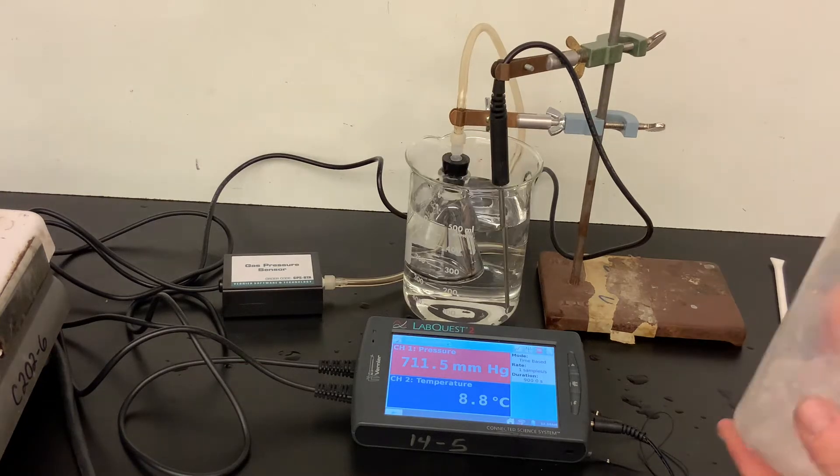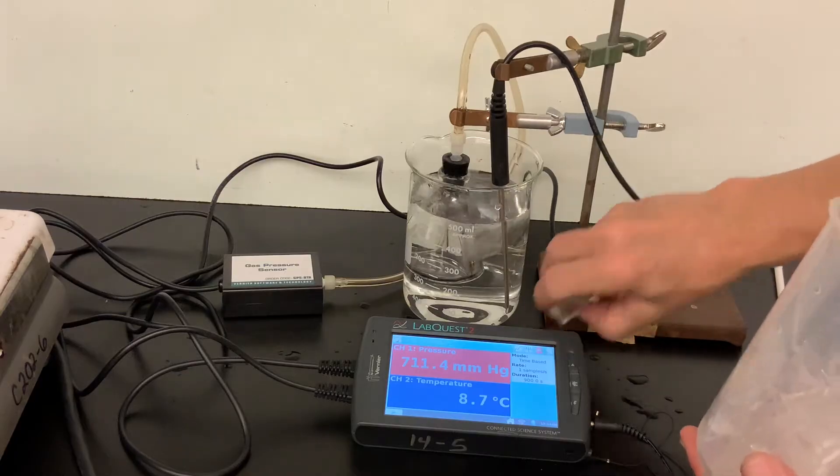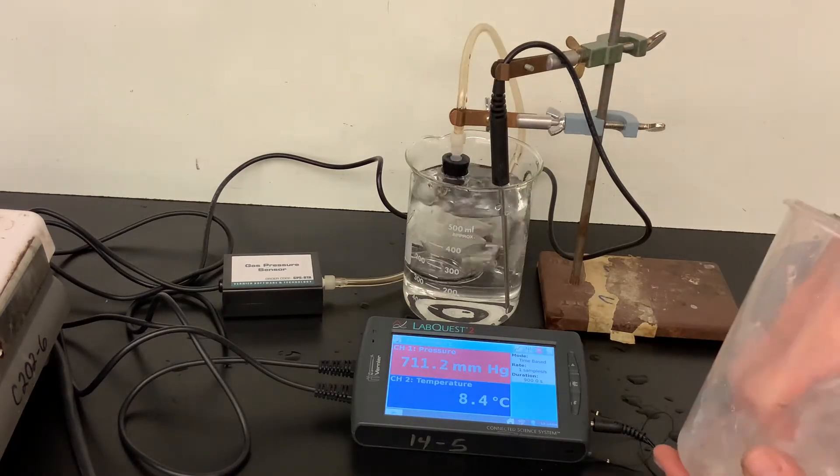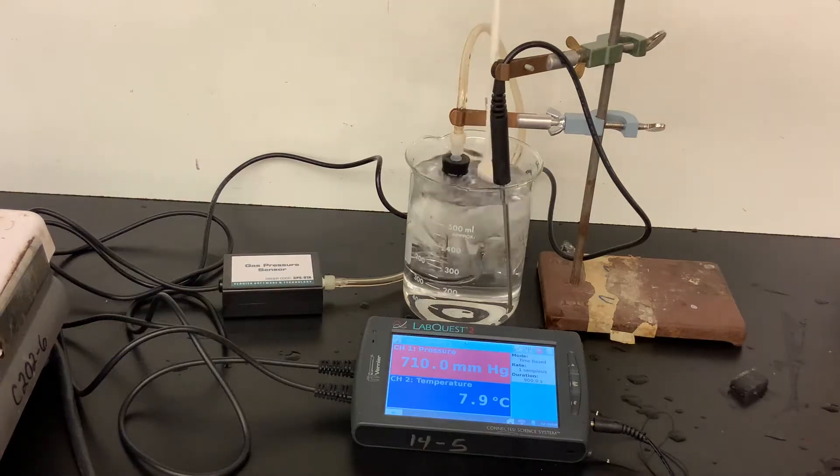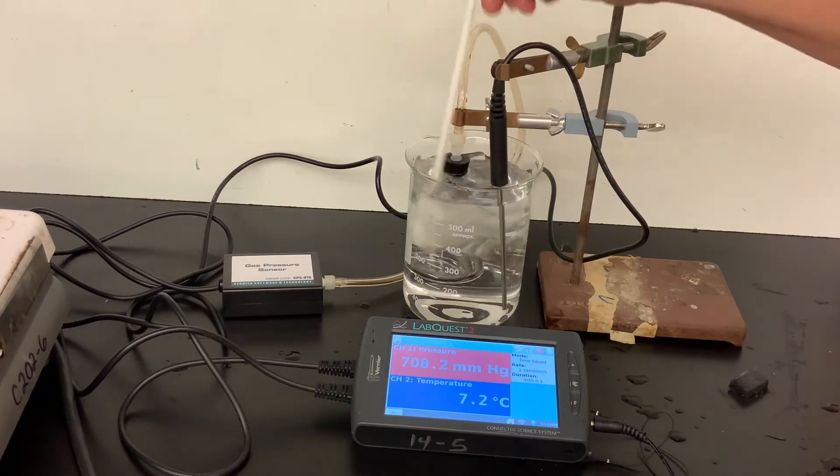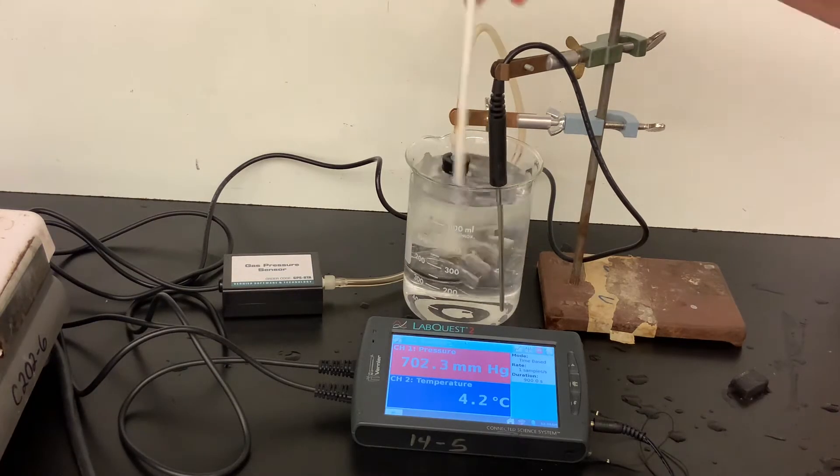So we'll repeat this procedure with a little bit more ice and bring the temperature down a bit colder with stirring. There's obviously some lag time between the ice being added and the temperature adjusting inside the flask.